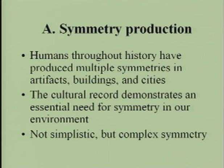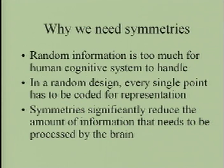Let me begin with symmetry production. Human beings throughout history have produced multiple symmetries in artifacts, buildings, and cities. If we look at the cultural record of humankind, it demonstrates we have an essential need for symmetry in our environment. Otherwise, why produce so many symmetries in our artifacts, buildings, and cities?